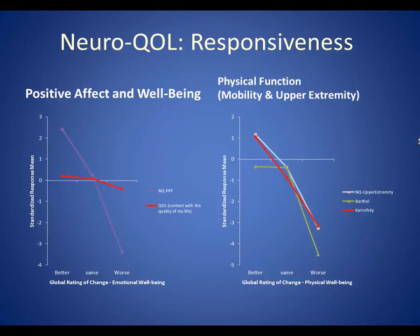This graph shows the responsiveness of several Neuroqual measures compared to some other measures given at the same time. The standardized response mean (SRM) is one of several available effect size indices used to gauge the responsiveness of scales to clinical change. These graphs show how the measures performed in terms of standardized response mean. As you can see, these particular Neuroqual measures demonstrated better responsiveness than some of the legacy measures.